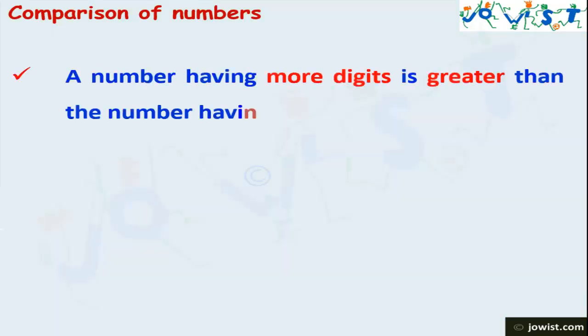A number having more digits is greater than the number having less digits. Let's take an example: 85 and 185. Here, 85 has two digits: 5 ones and 8 tens. 185 has 1 hundred. So, 185 is greater than 85.